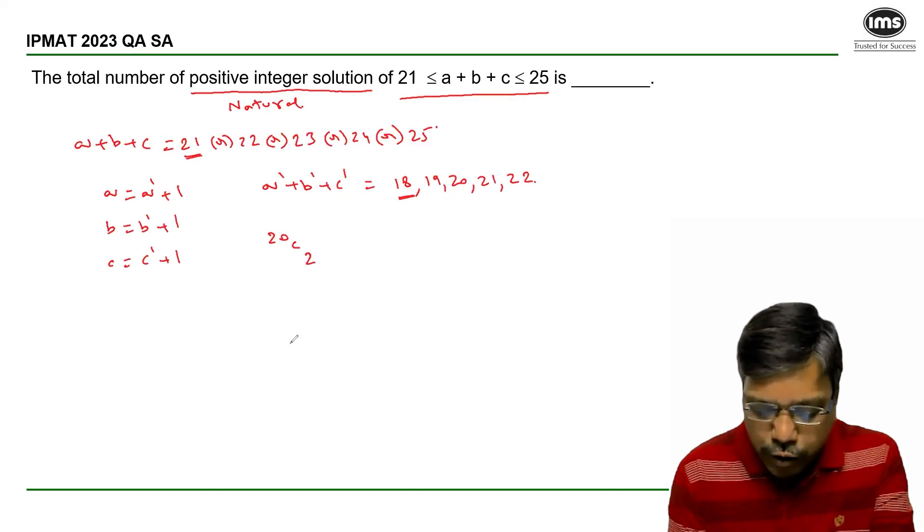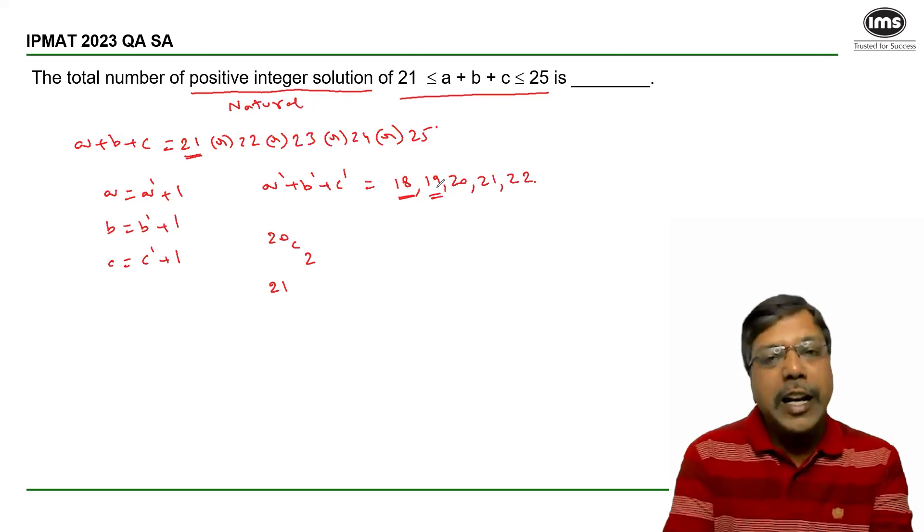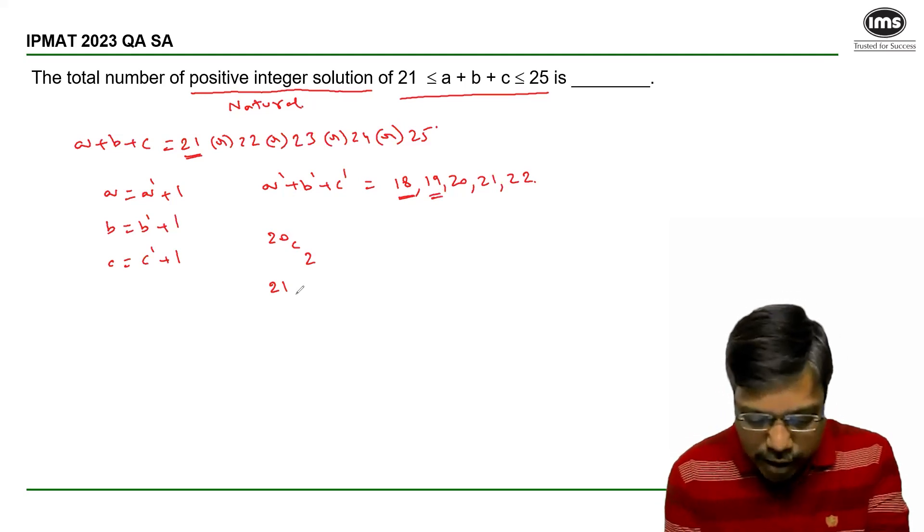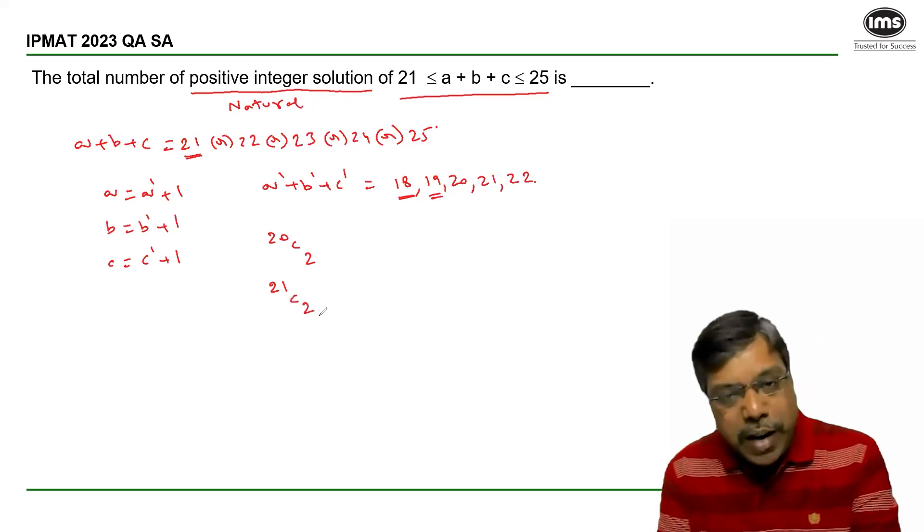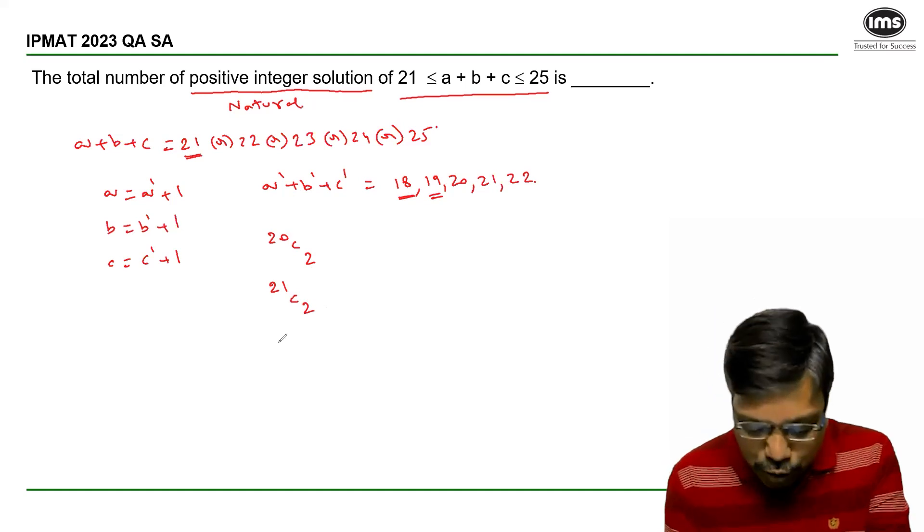So 20C(3-1), which is 20C2. And then if I take 19, 19 + 3 = 22 - 1 = 21C(3-1), that is 21C2. Similarly, 22C2, 23C2, and 24C2.